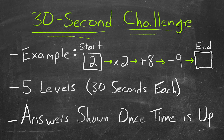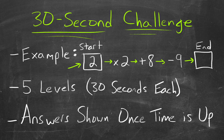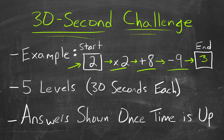Here's what we have going on. We will start with a number, and then it will go through a series of operations. We need to figure out what we end with. So for example, let's start with 2. Then we multiply by 2 — so 2 times 2 is 4 — plus 8 is 12, minus 9 gives us 3. So we end with 3, and that's our answer.